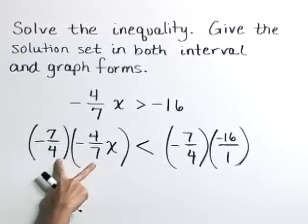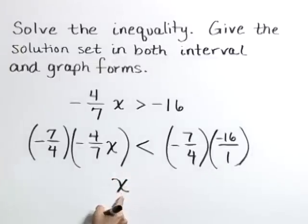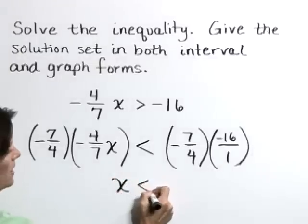On the left, multiplying those reciprocals cancel out to 1 or 1x. I'm just going to write that as x, is less than.